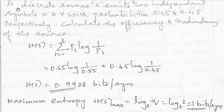Here it is given that a discrete source S emits two independent symbols X and Y with probabilities 0.55 and 0.45 respectively. Calculate the efficiency and the redundancy of the source.